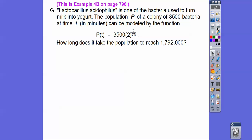One more. Lactobacillus acidophilus is one of the bacteria used to turn milk into yogurt. The population P of a colony of 3,500 bacteria at time t, t is in minutes, can be modeled by this function right here. Remember, the exponential functions can be the inverses of logarithmic functions. How long does it take the population to reach 1,792,000? What I'm going to do is solve for t, and then when I solve for t, I'll go ahead and substitute that in.